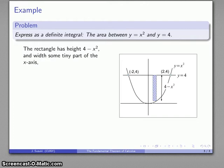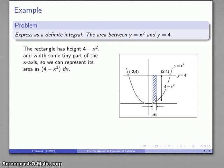The width of that rectangle is going to be some tiny bit of the x axis, again we'll represent that as dx, and the area of that we can represent as 4 minus x squared, that's height times dx, that's width, and so our area of that one little rectangle, 4 minus x squared dx.